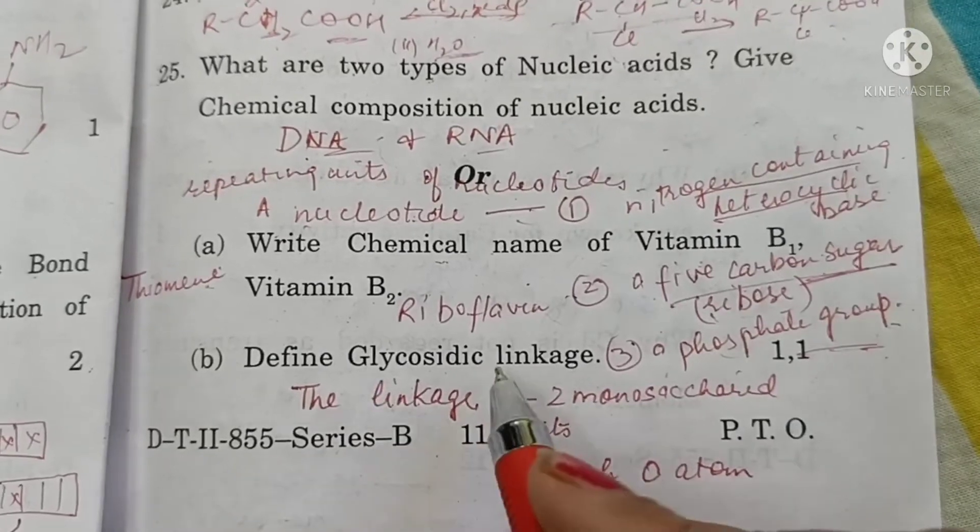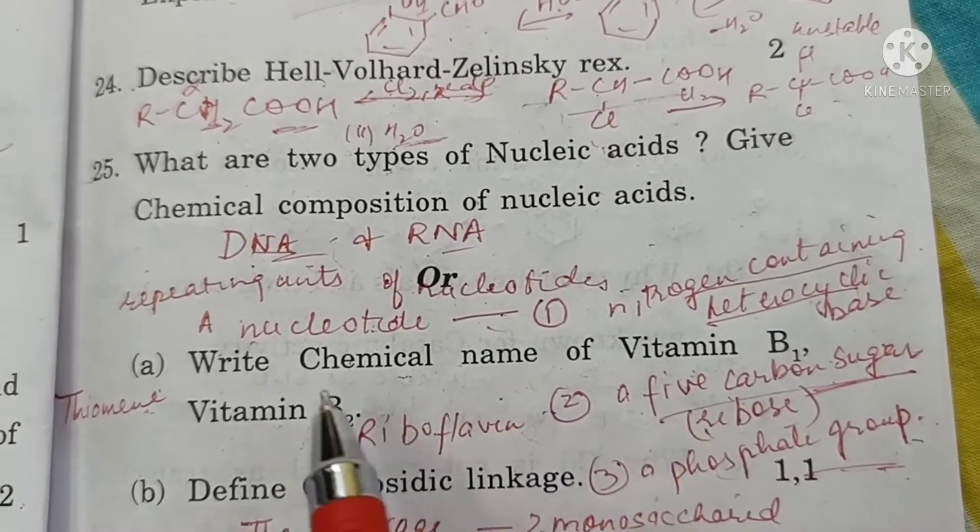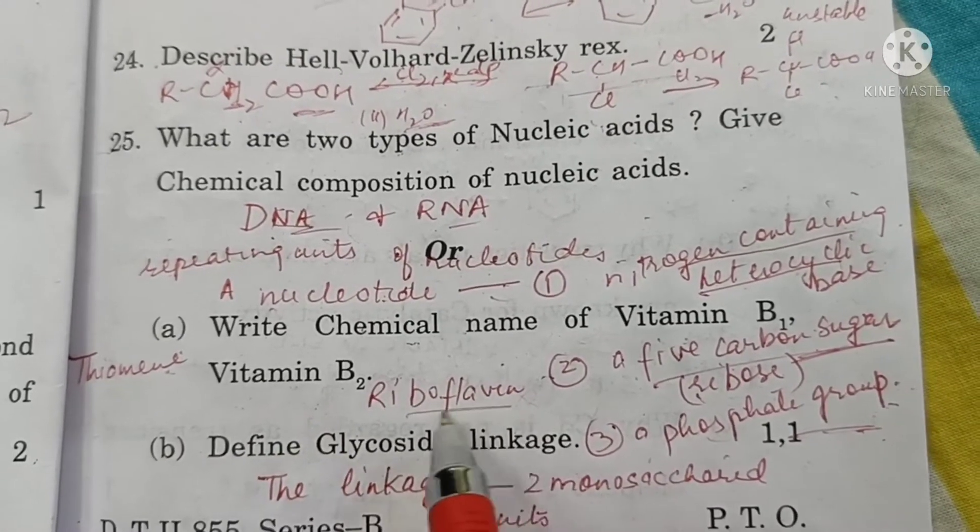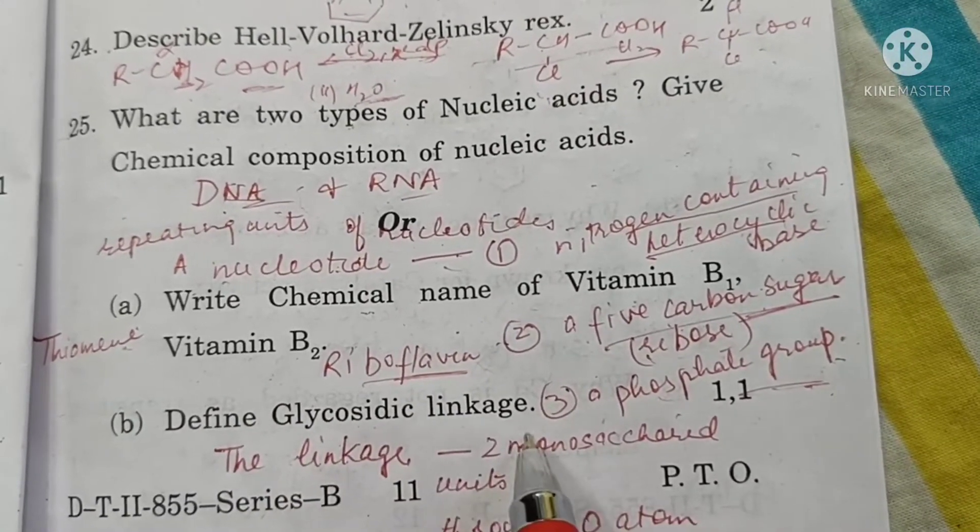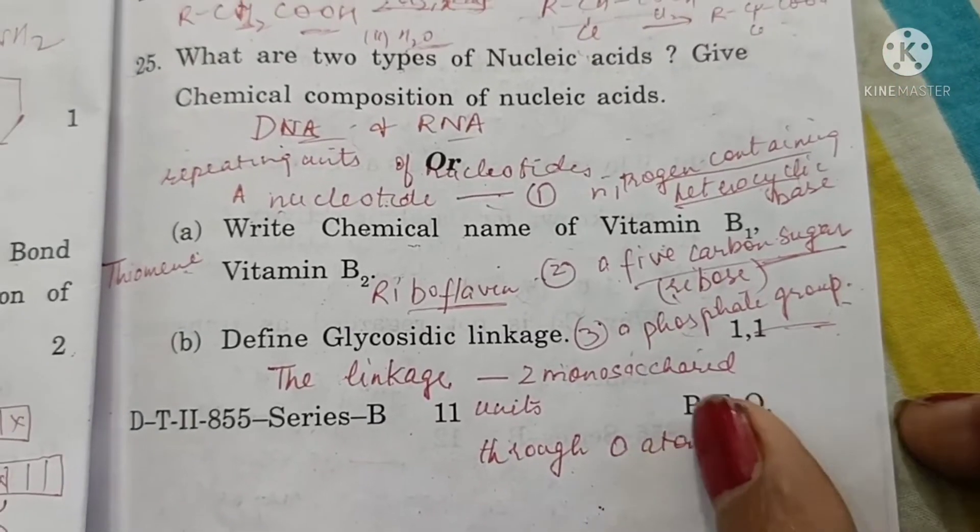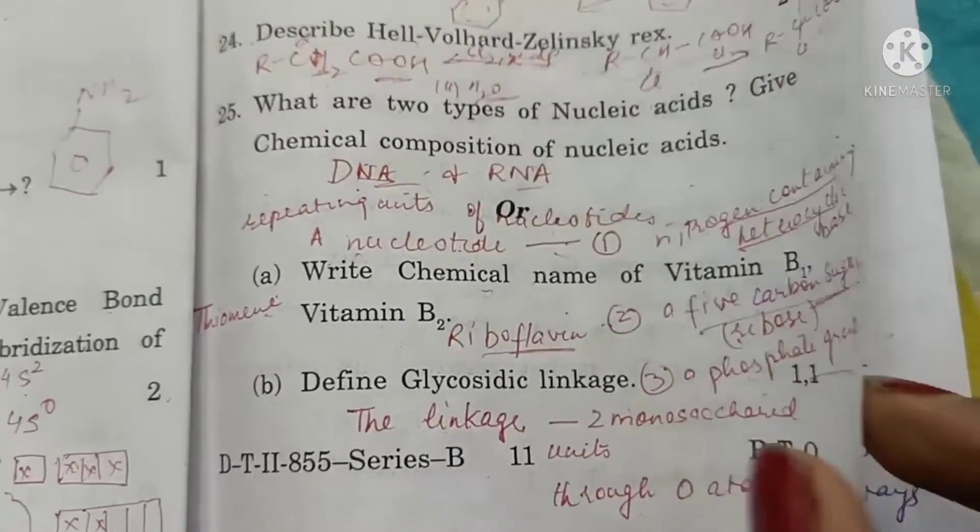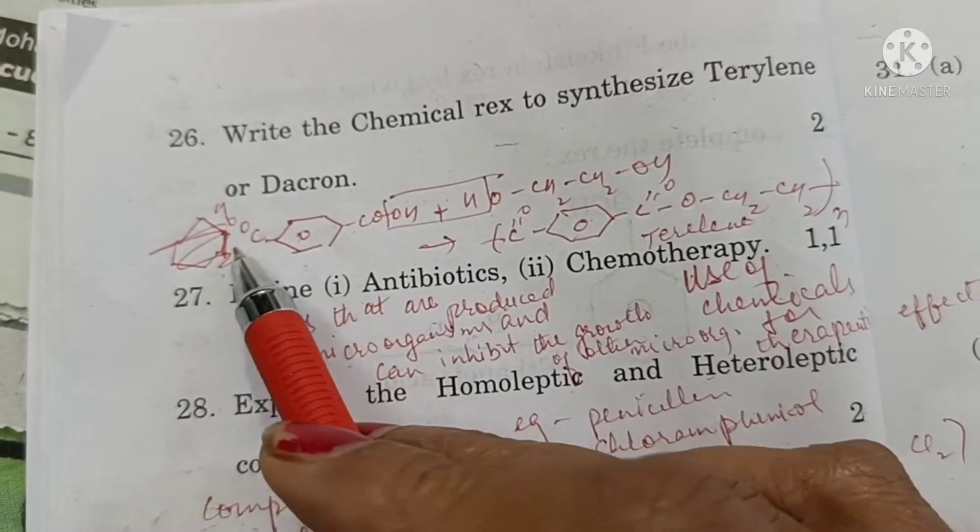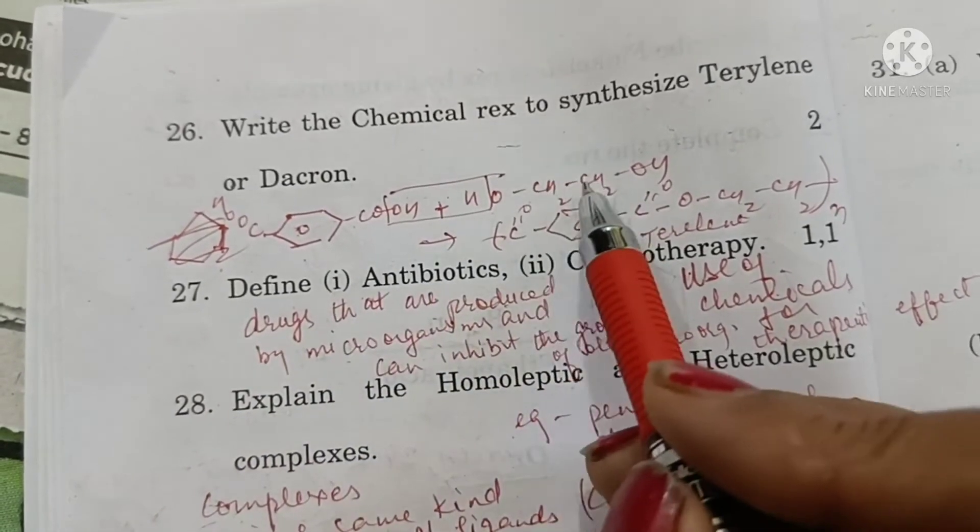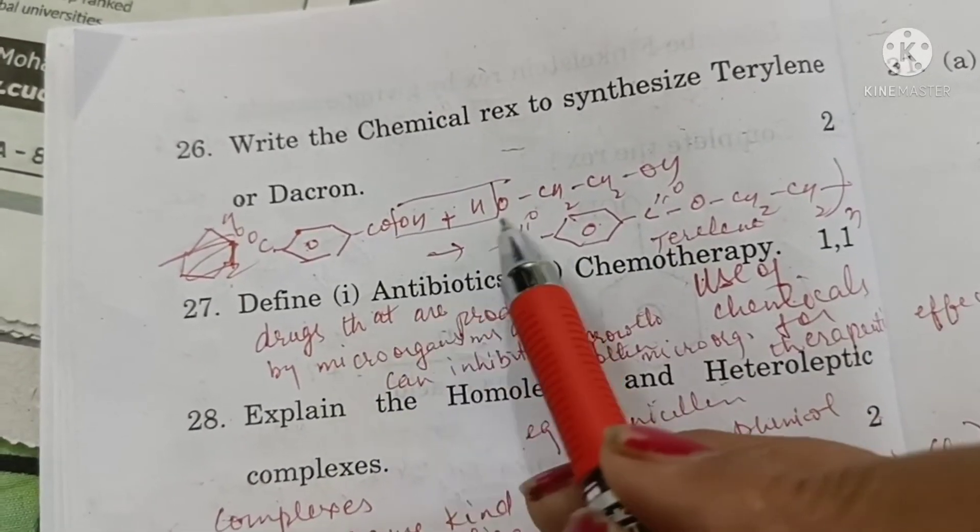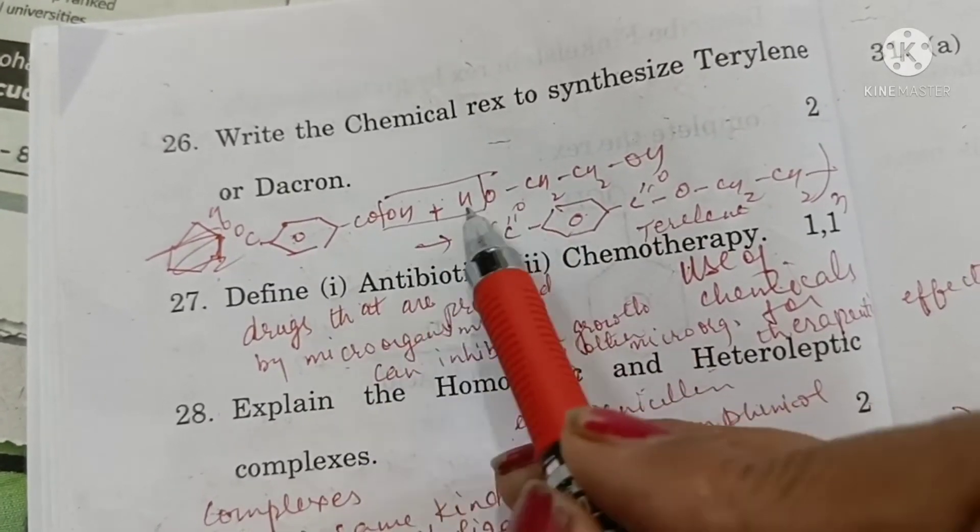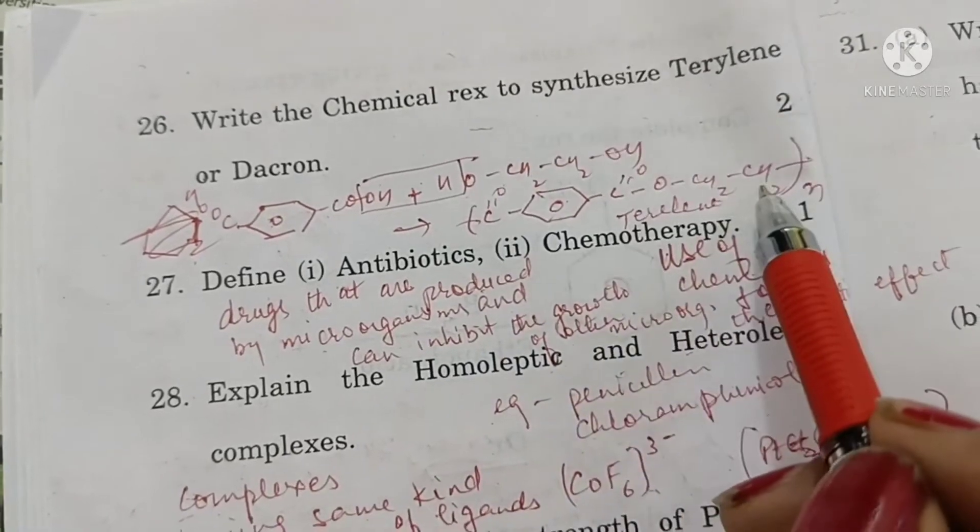What is the chemical name of vitamin B1? It is thiamine. Vitamin B2? It is riboflavin. Define glycosidic linkage. The linkage between two monosaccharide units through oxygen atom is called glycosidic linkage. Write the chemical reaction to synthesize terylene. Terylene is formed by reaction between terephthalic acid and ethylene glycol. OH of terephthalic acid and H of ethylene glycol combine to form water and the two join to form terylene.